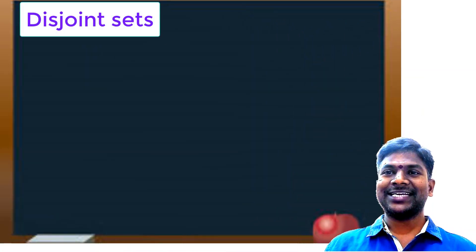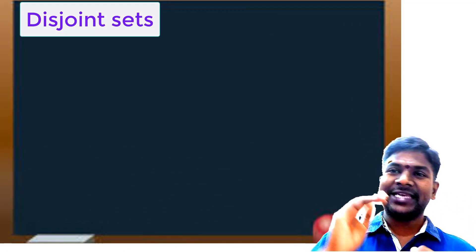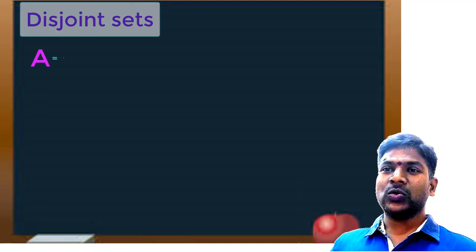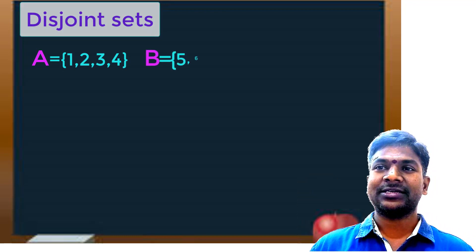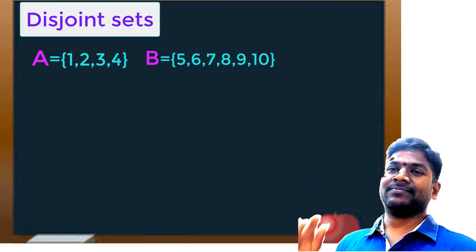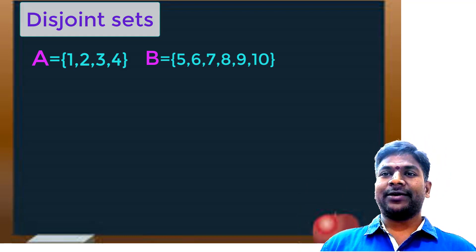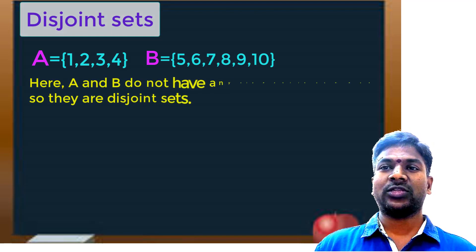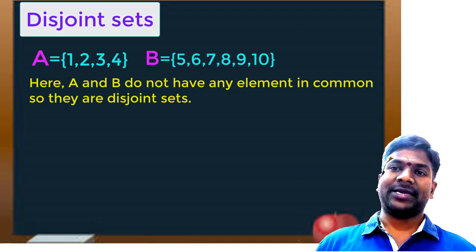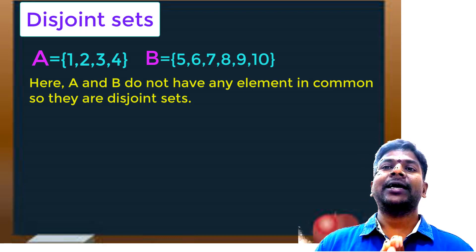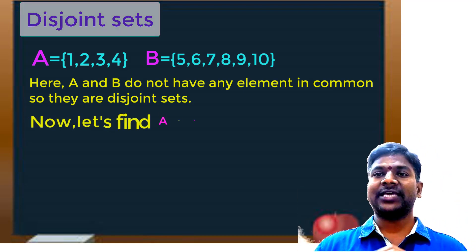Now let us take some more concepts with disjoint sets. As we discussed, disjoint sets have no common elements. Set A = {1, 2, 3, 4} and set B = {5, 6, 7, 8, 9, 10}. Clearly, these two are disjoint sets. Now let us try to find A intersection B. Intersection means the common elements of set A and set B taken as elements of A∩B.